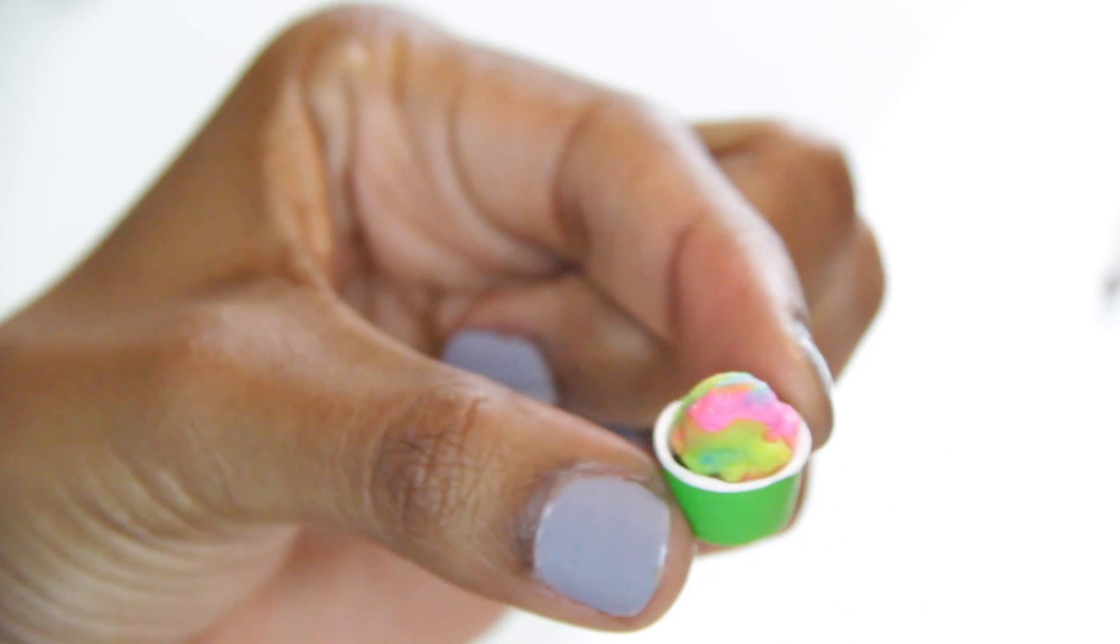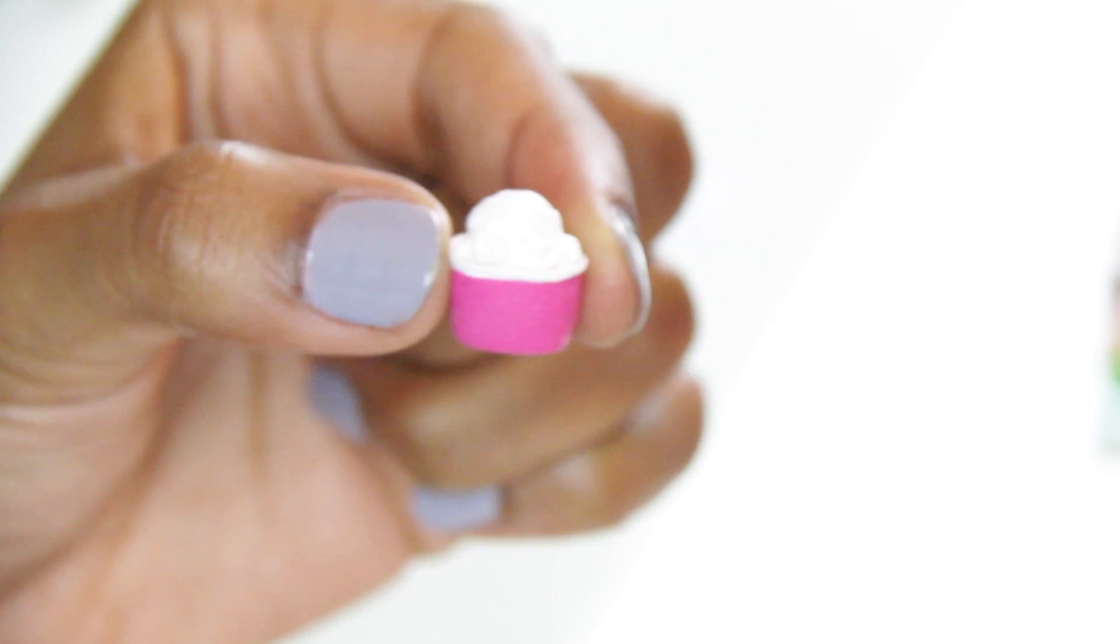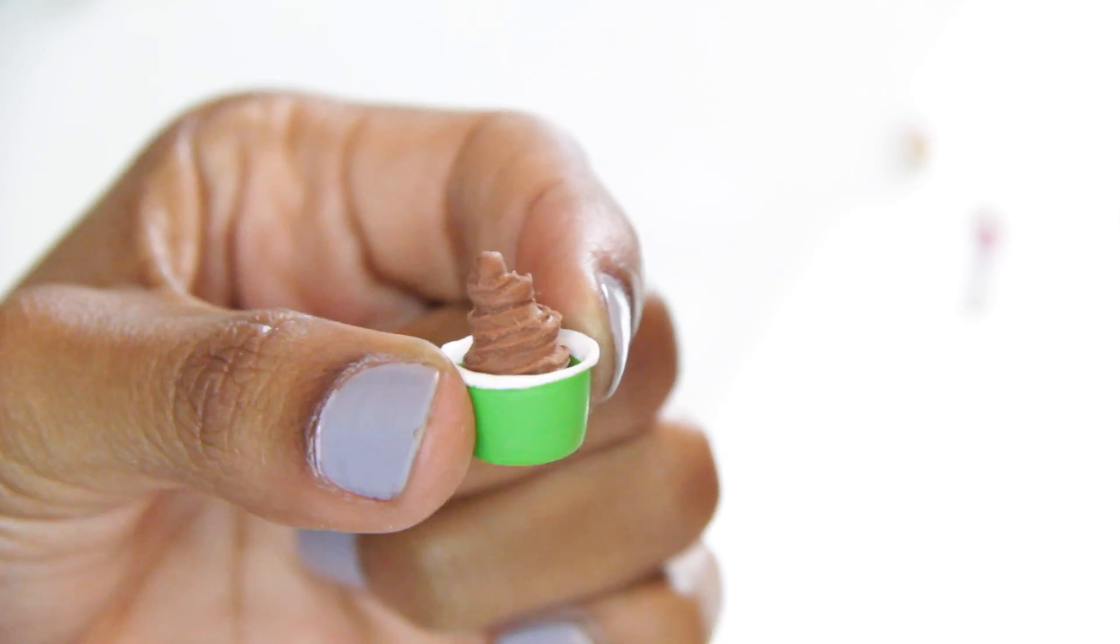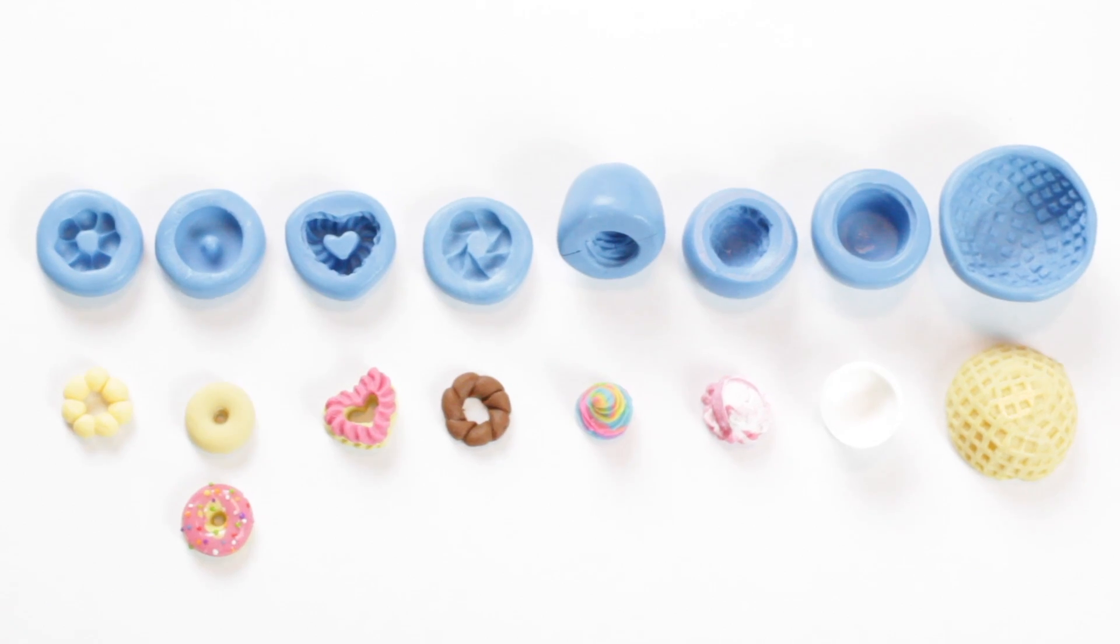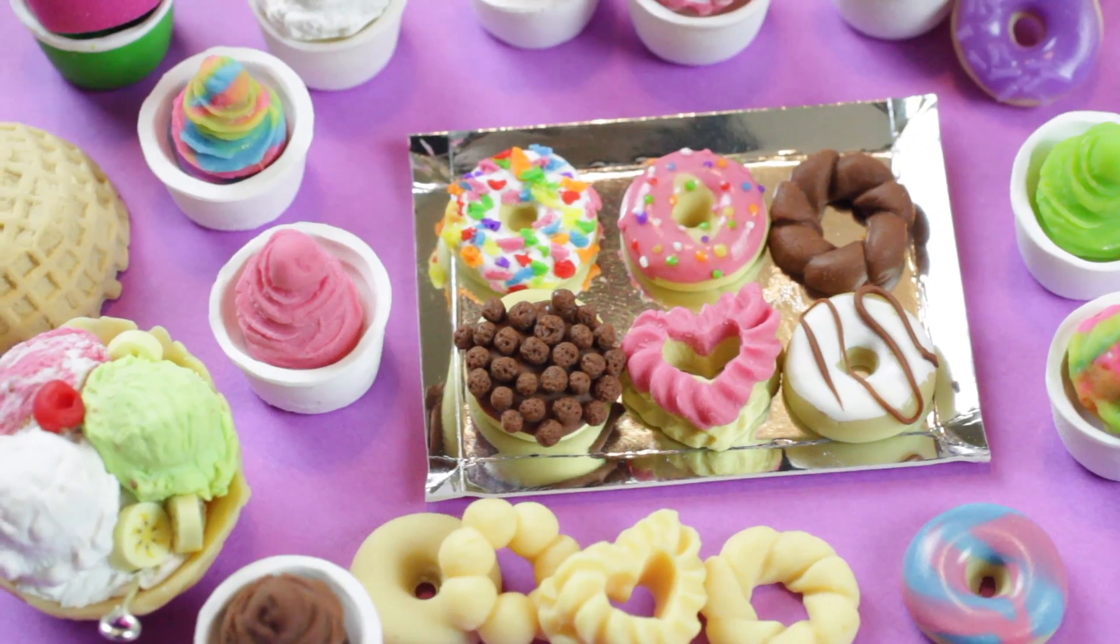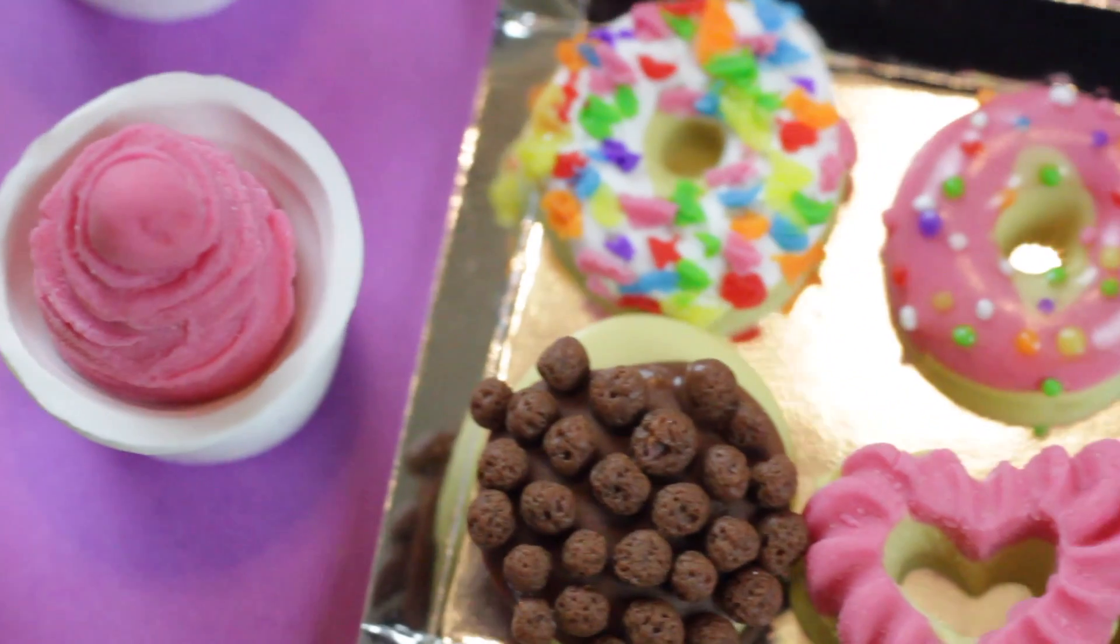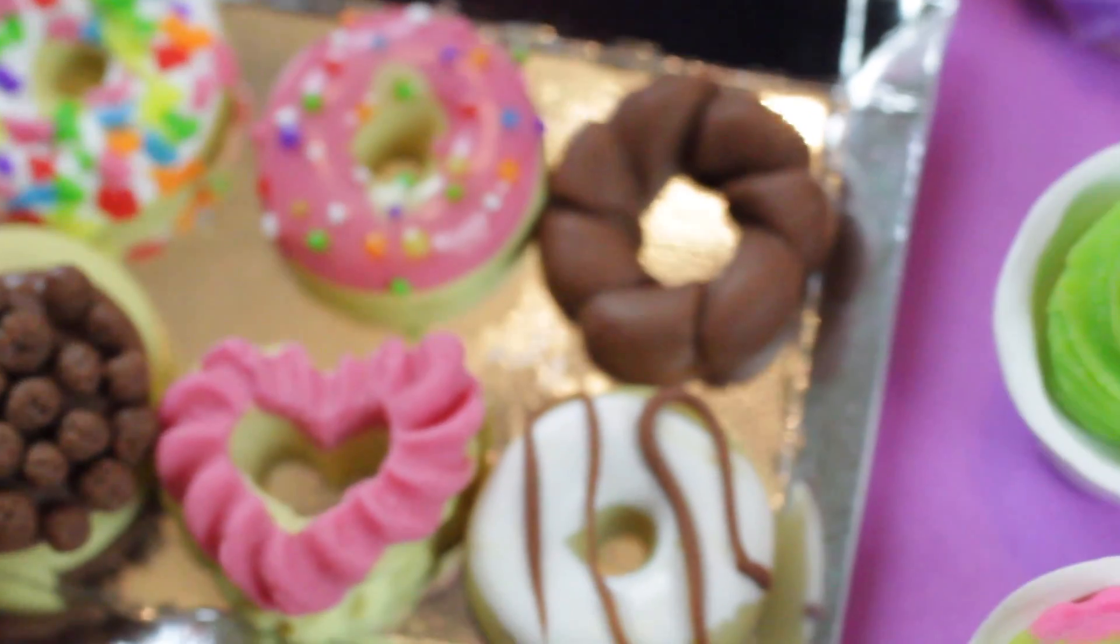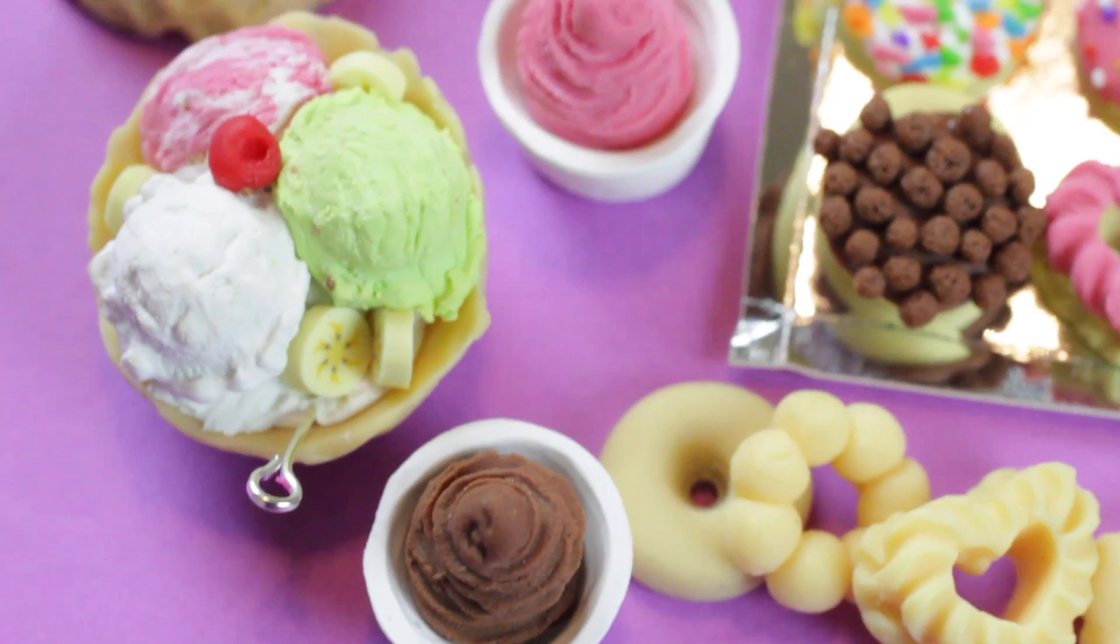So here I made a little green fro-yo cup and a pink one. And here are the eight different molds in this box and here's everything now that it's finished, the little donuts and the fro-yo. With the findings in the box you can turn these into charms, earrings, rings or key chains.